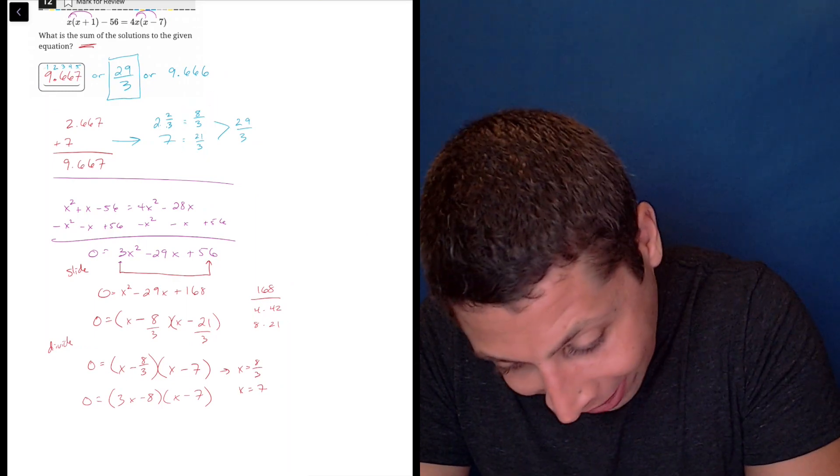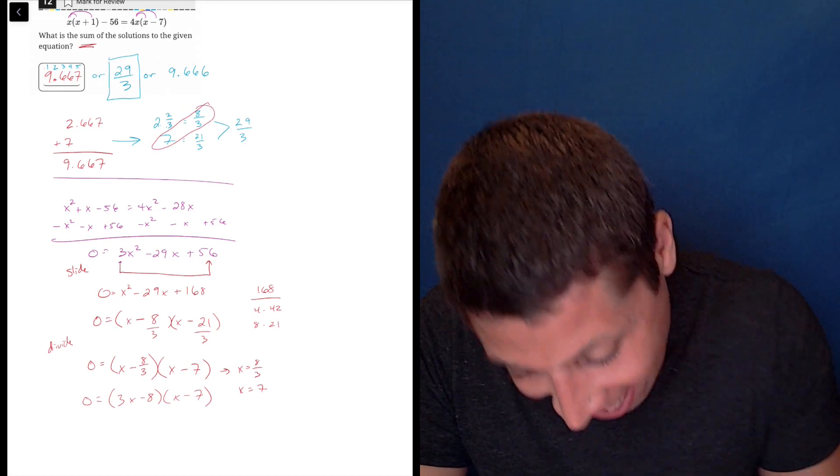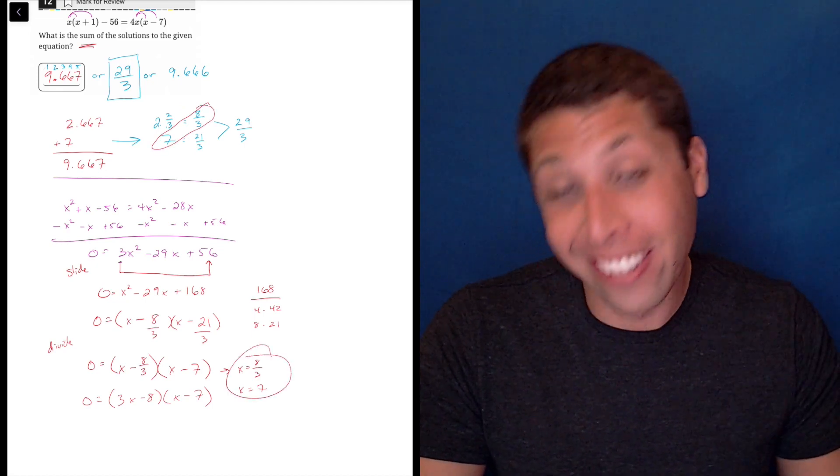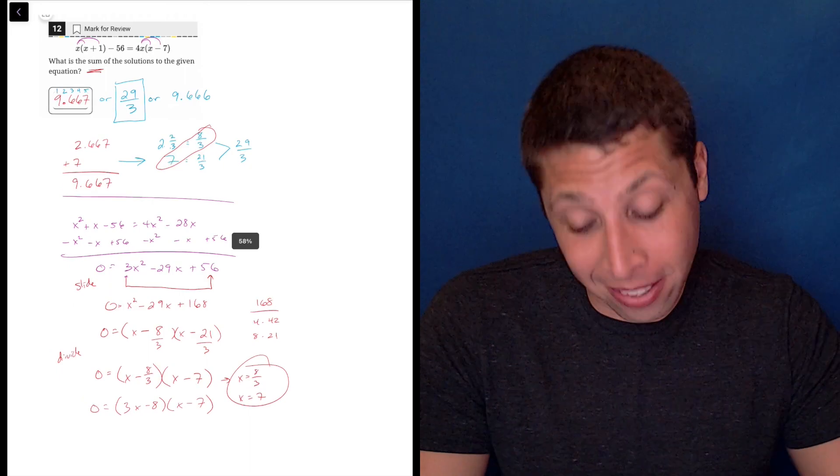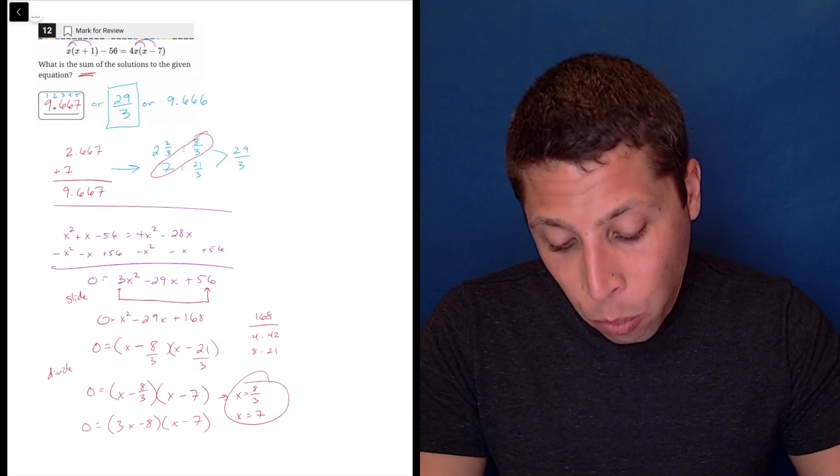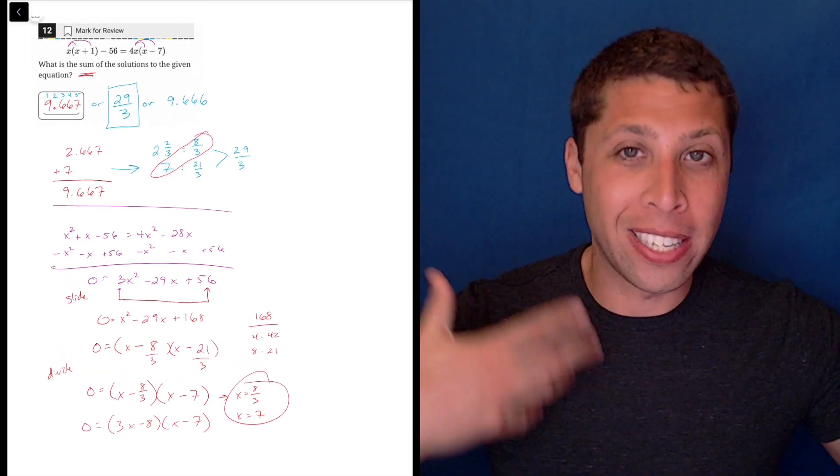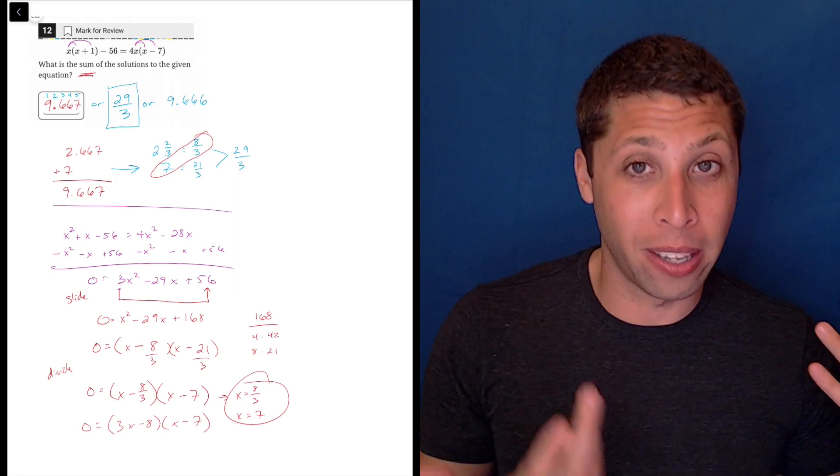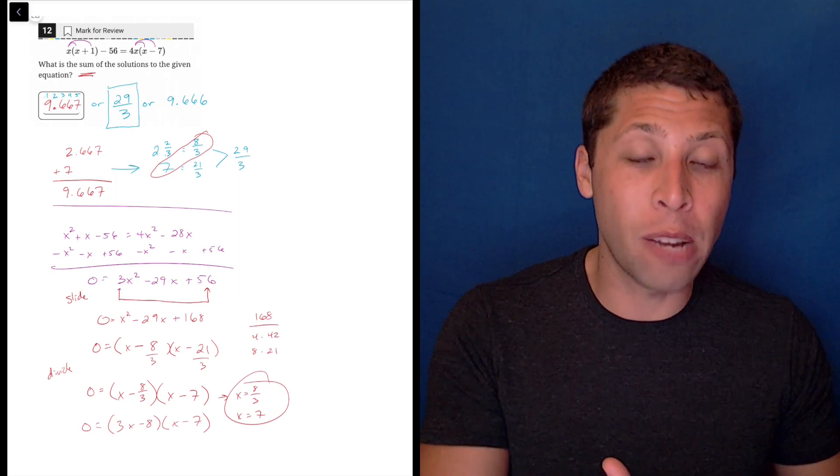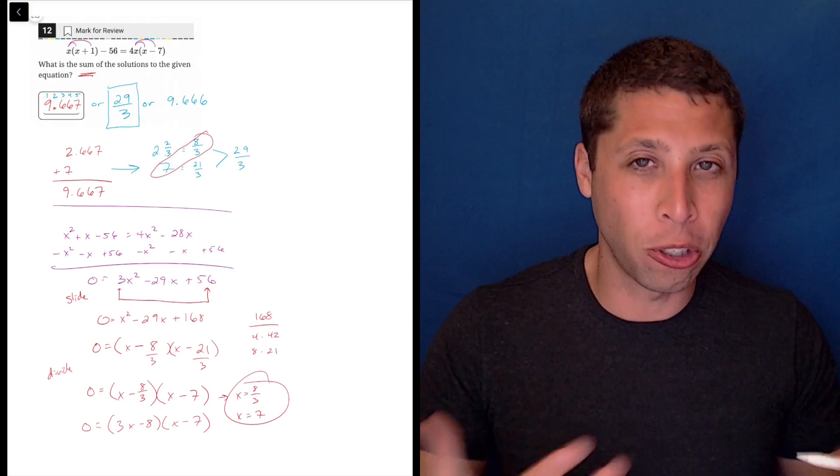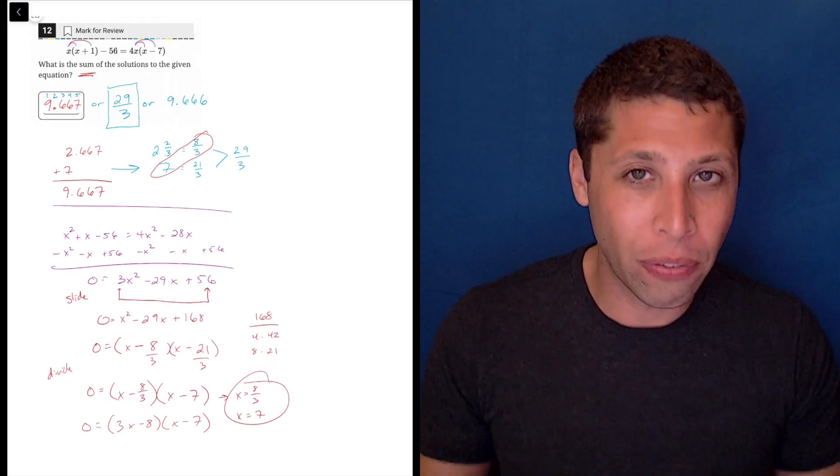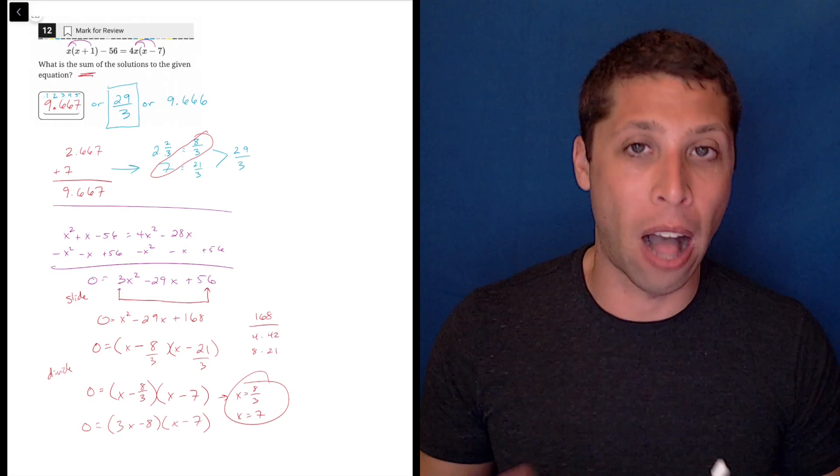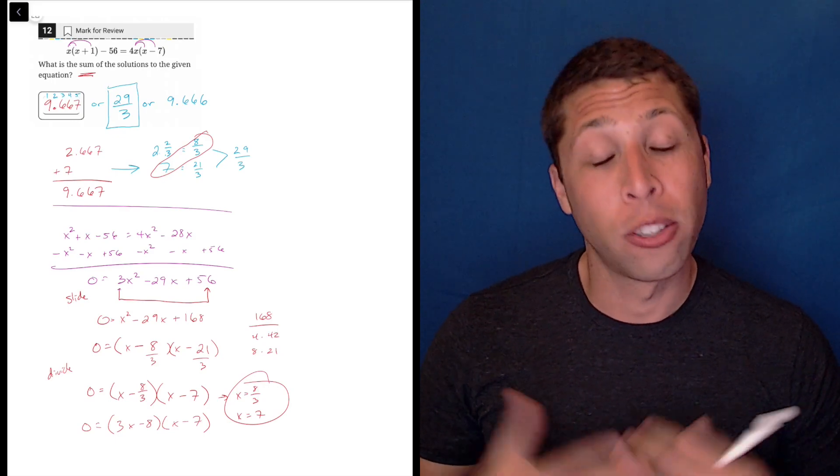or I should do it more like this, 8 thirds and 7, 8 thirds and 7. It's a mess. It's a mess. I think no matter what, you're dealing with some difficult ideas for a question like this, whether it's going the algebra route or whether it's doing the calculator and just understanding what the calculator is giving you and what you're supposed to do with that answer. So it's difficult in lots of different ways, but I think the calculator is more reliable in the long run. So try to get used to that.